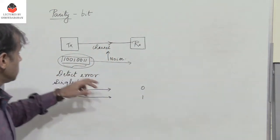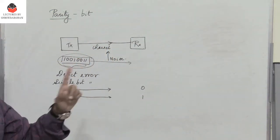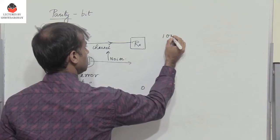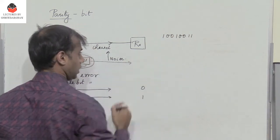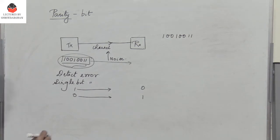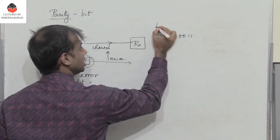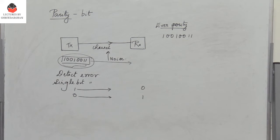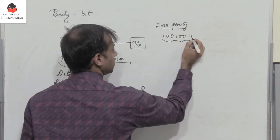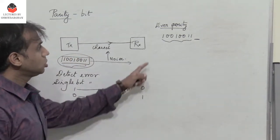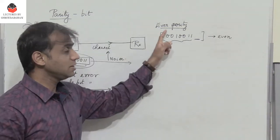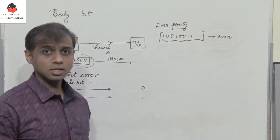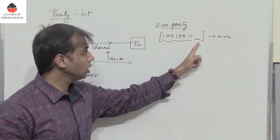Using a parity bit, we can detect the presence of a single error. Let us assume the data transmitted is 10010011. When we want to add parity, we have two different options. The first is known as even parity. In even parity, an extra bit is added along with the eight bits such that the total number of 1s, including the parity bit, is even.